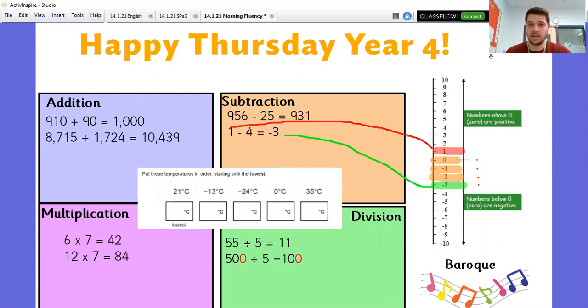Okay, so let's have a look at our negative numbers again. One minus four. One take away four. I'm going to start on one and I need to subtract four.